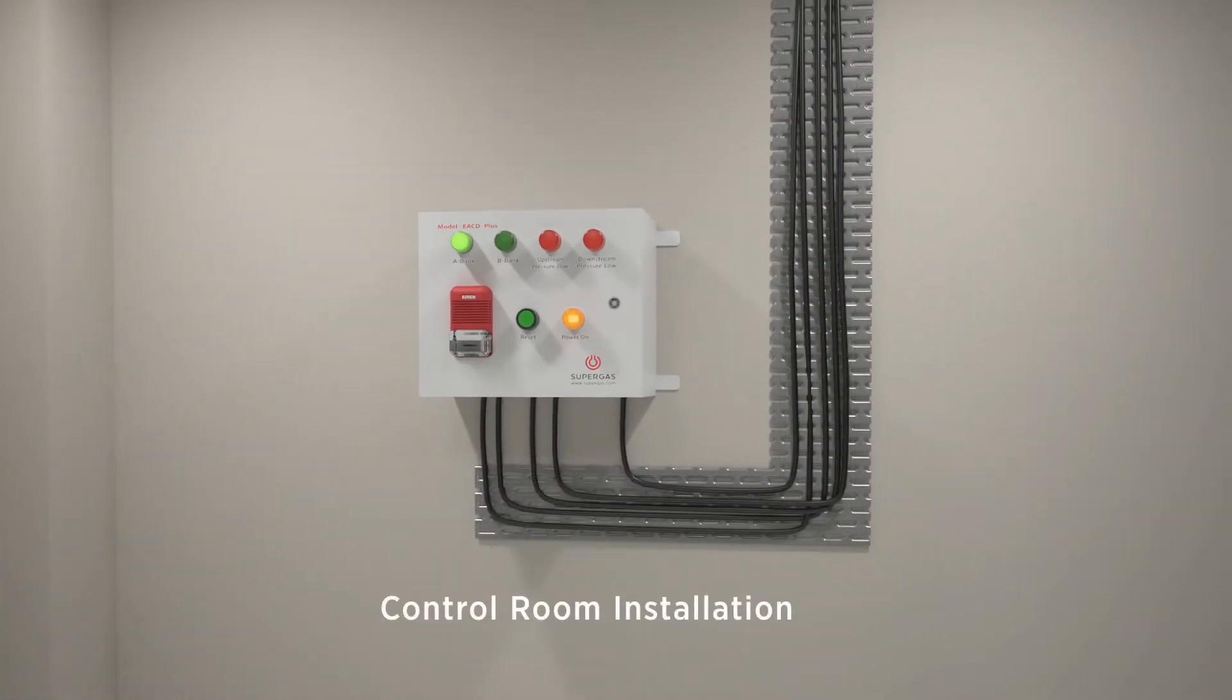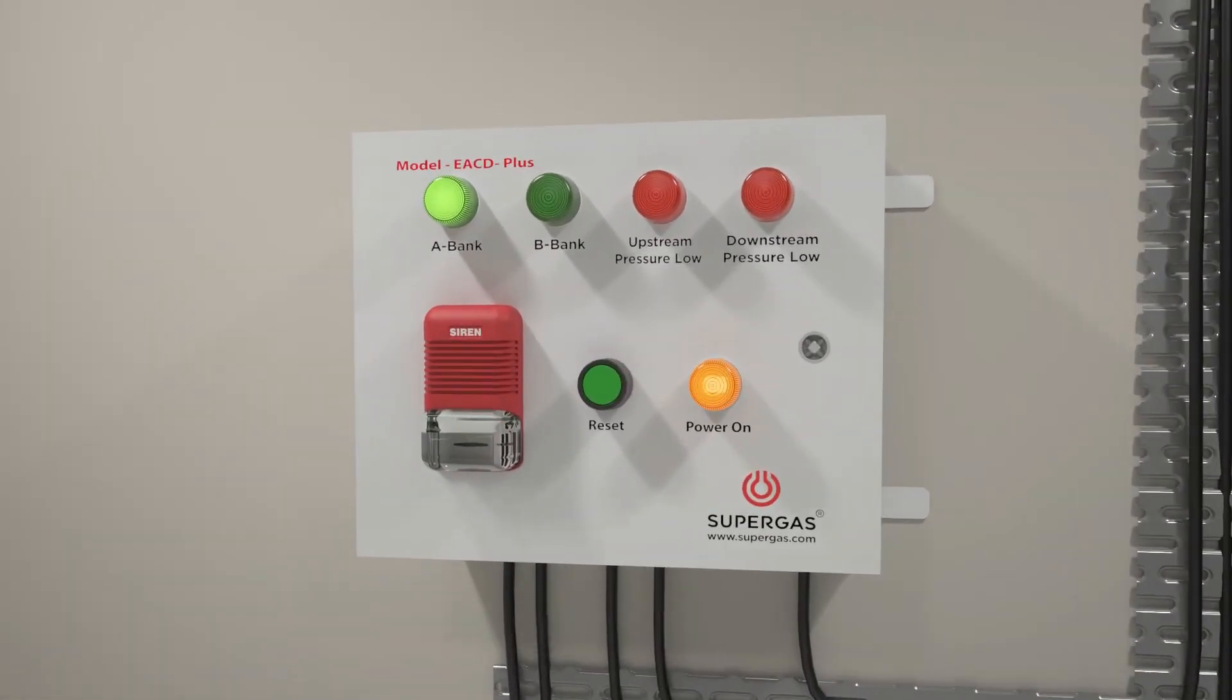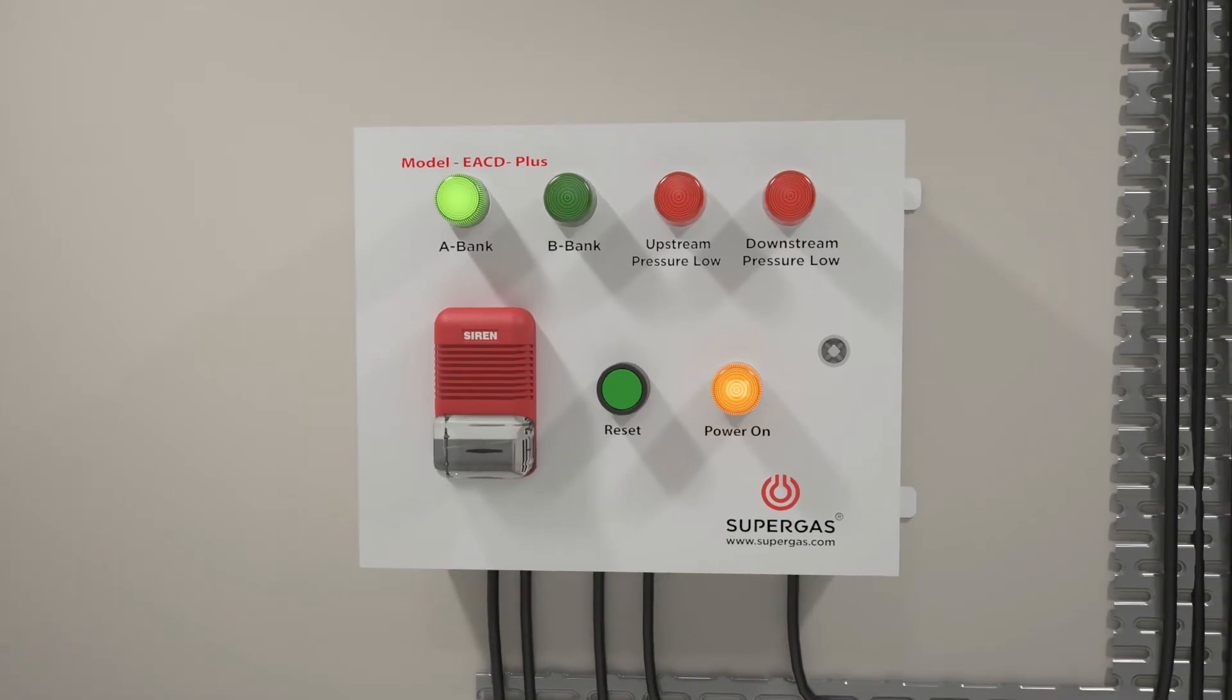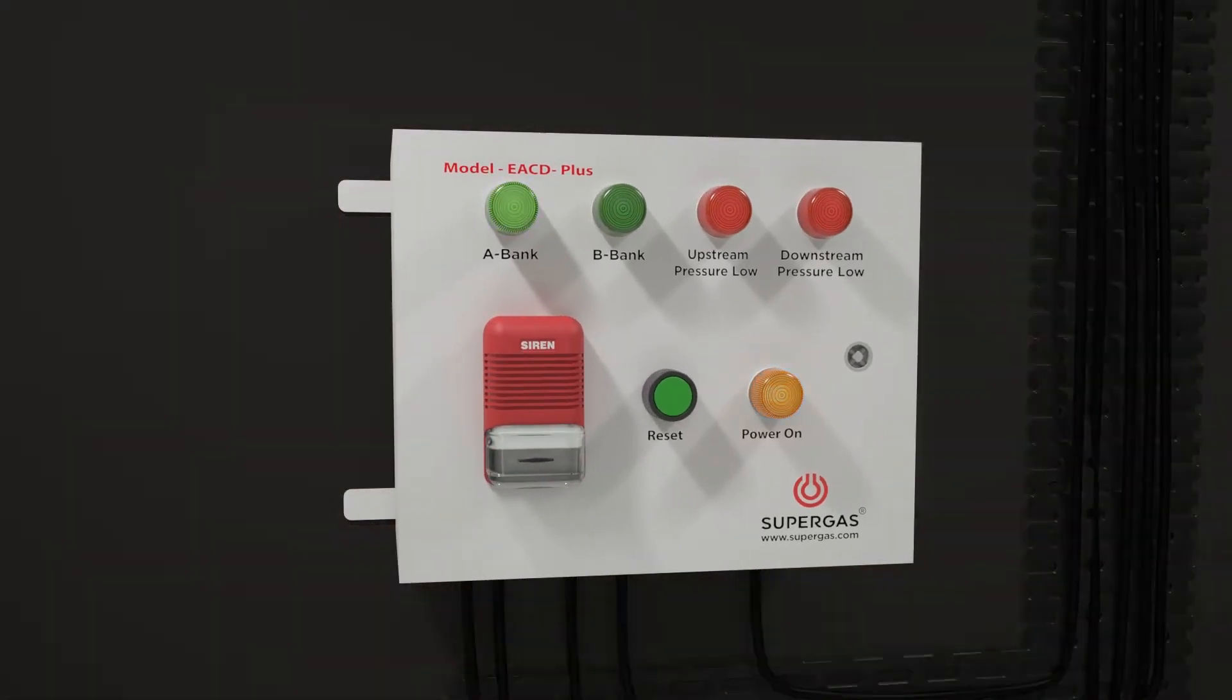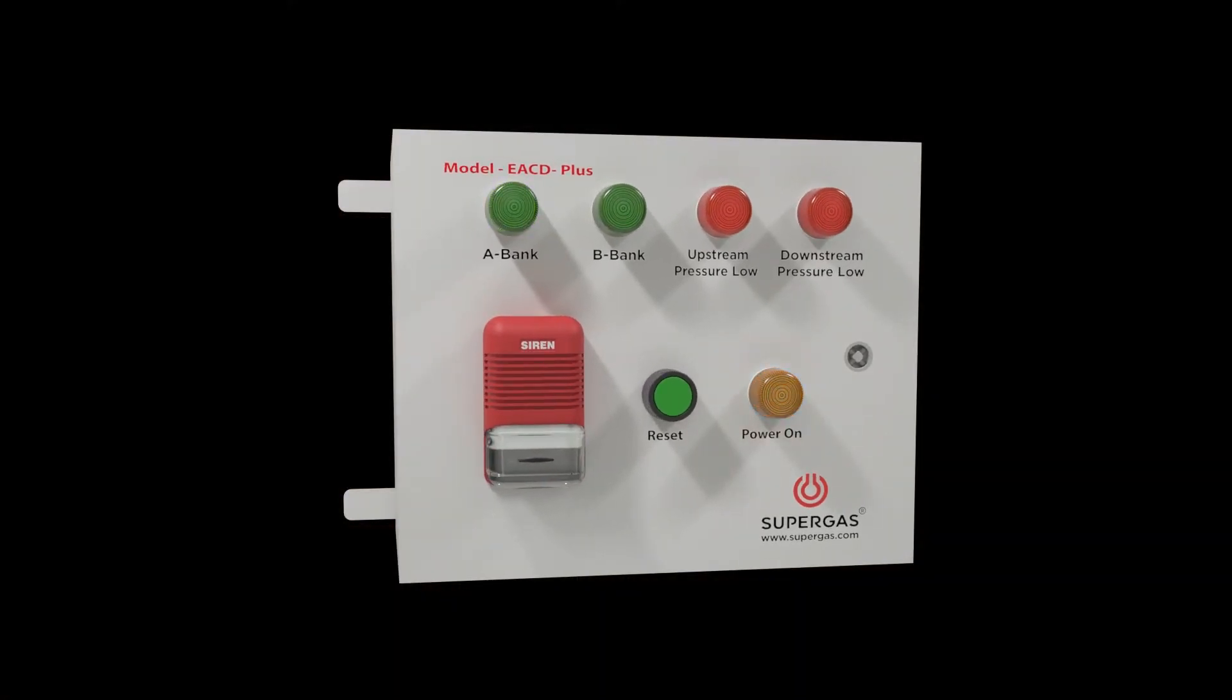The EACD Plus system comes with an indication panel installed in the control room of the factory premises or anywhere where the concerned in-charge personnel can monitor. The panel comes with several indication lamps for identifying the working bank, low upstream and downstream pressure, a power-on indication lamp, a hooter, and a reset button.